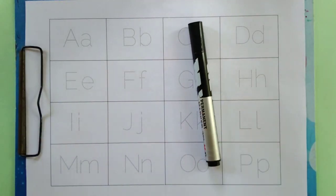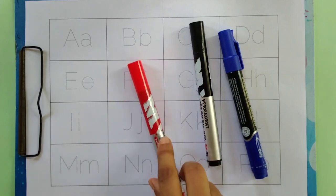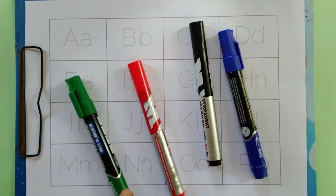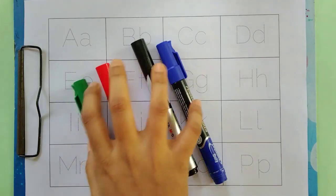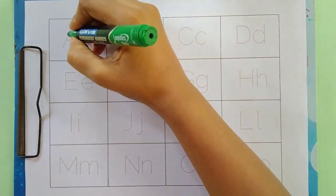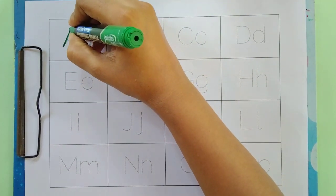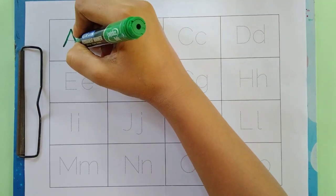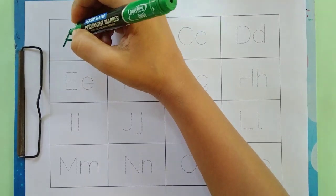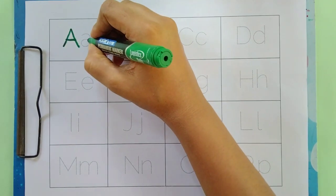Black color, blue color, red color, green color. A for apple, A for ant.